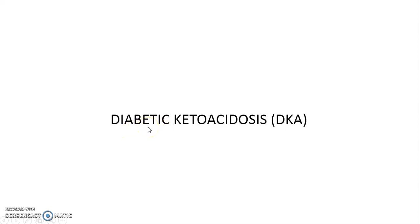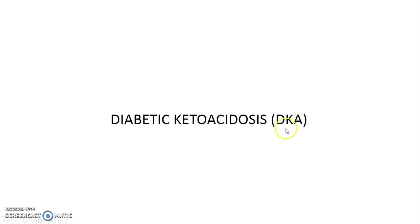Hello everyone. In today's video, I will be explaining about diabetic ketoacidosis. In short form, it is written and known as DKA — D for diabetic, K for keto, and A for acidosis.